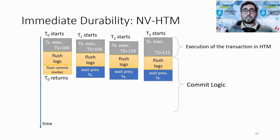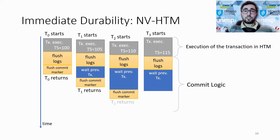In this example, T0 can flush its own local marker, as it does not depend on any other transaction. However, T1, T2 and T3 may depend on T0, because they have a larger timestamp than T0. Thus, they must wait for T0 to be ready for replay before flushing their commit marker. While the transaction with the smaller clock does not complete flushing the commit marker, the other transactions with a larger clock cannot proceed with the flush of their own commit marker. Thus, NVHTM incurs increasingly larger waiting times as more concurrent transactions try to commit.